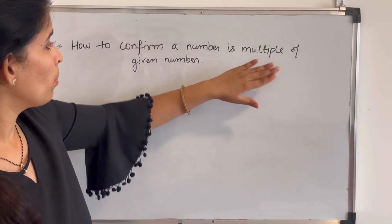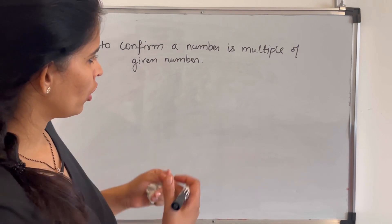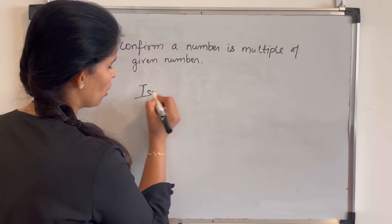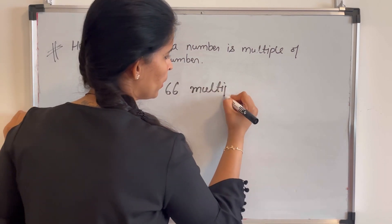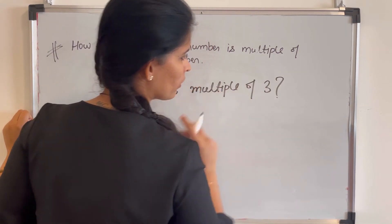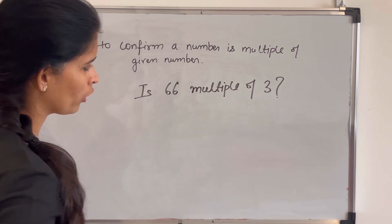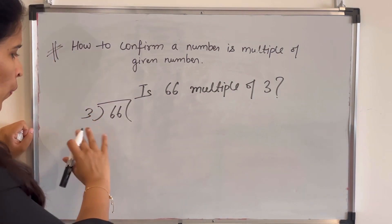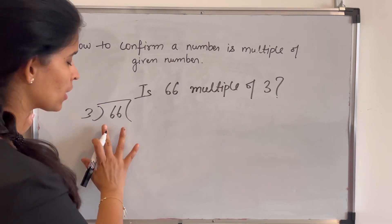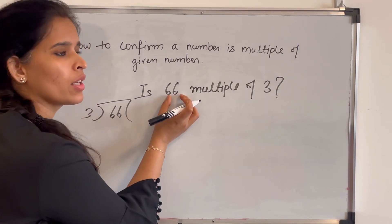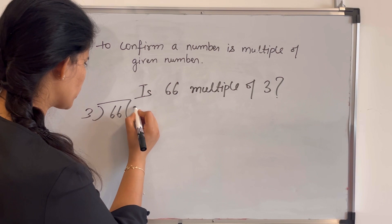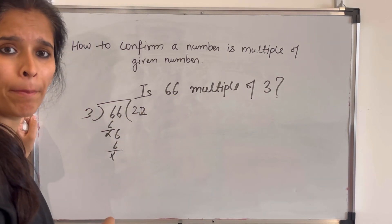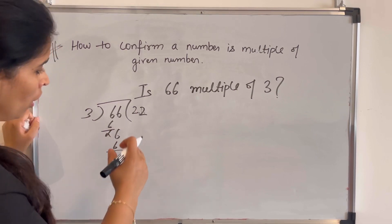Now let's learn how to confirm whether a number is a multiple of a given number. Suppose the question is: is 66 a multiple of 3? To check, we divide 66 by 3 and see whether it is completely divisible. 66 divided by 3 equals 22 with no remainder, so we can say that 66 is a multiple of 3.